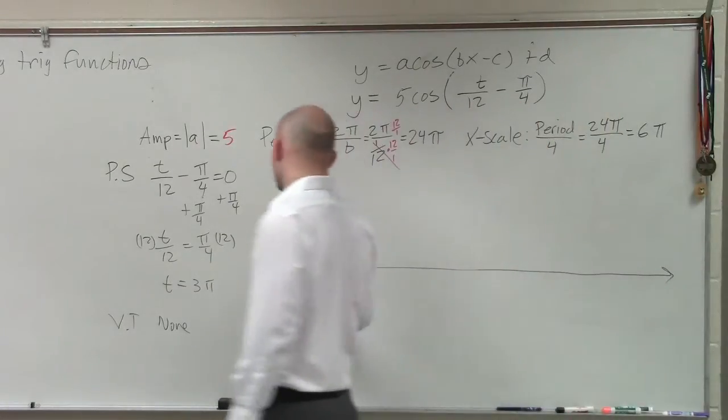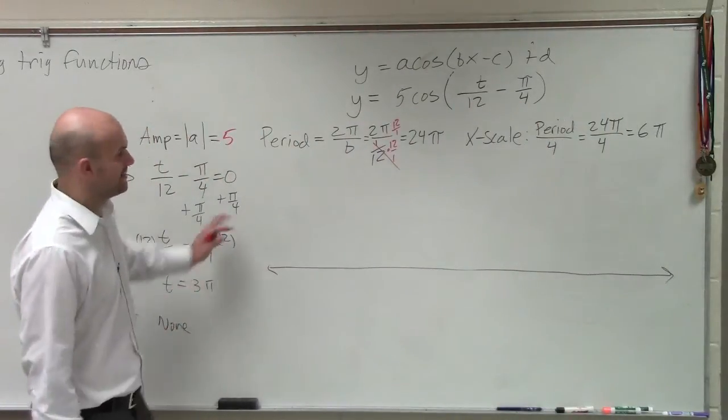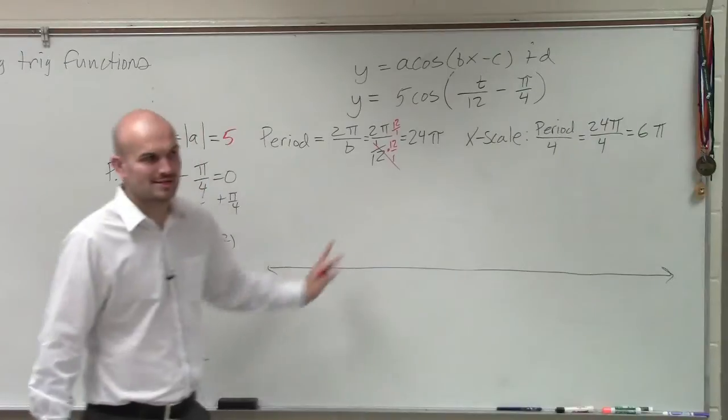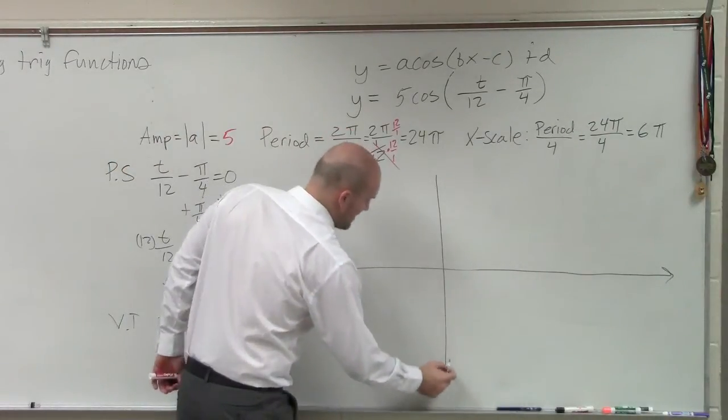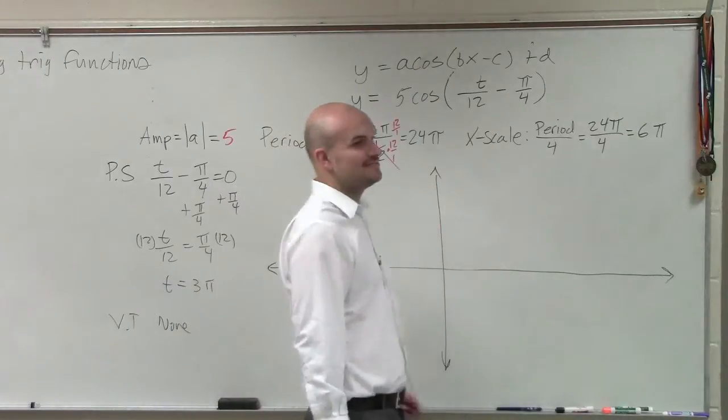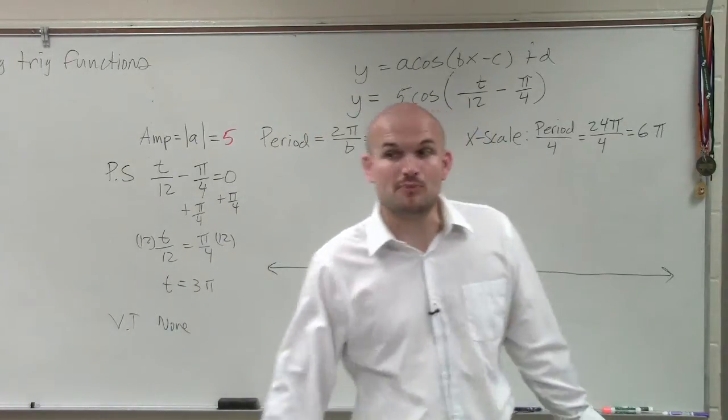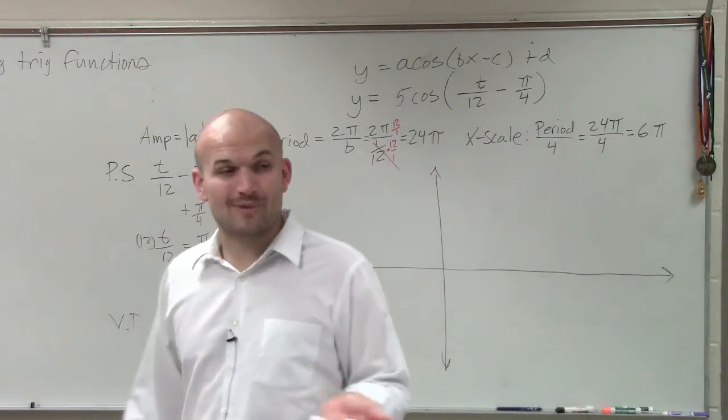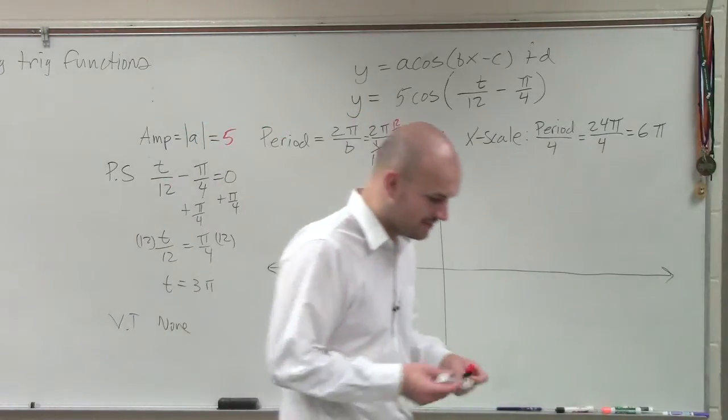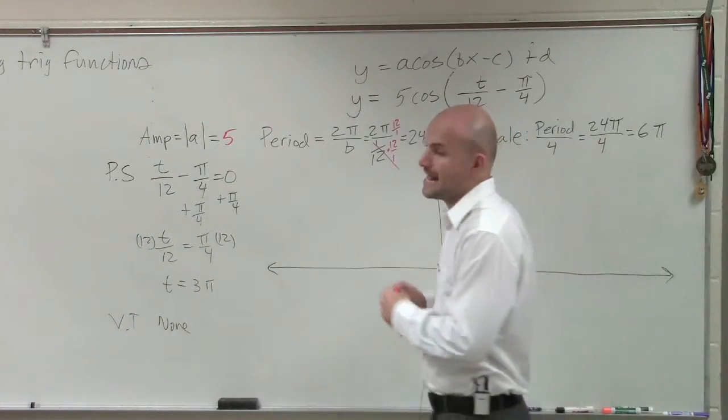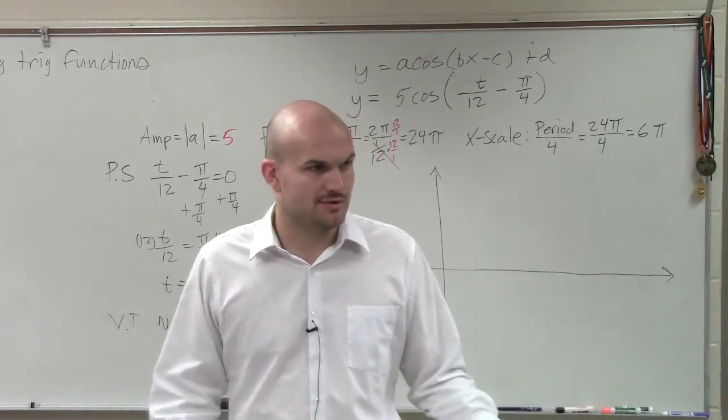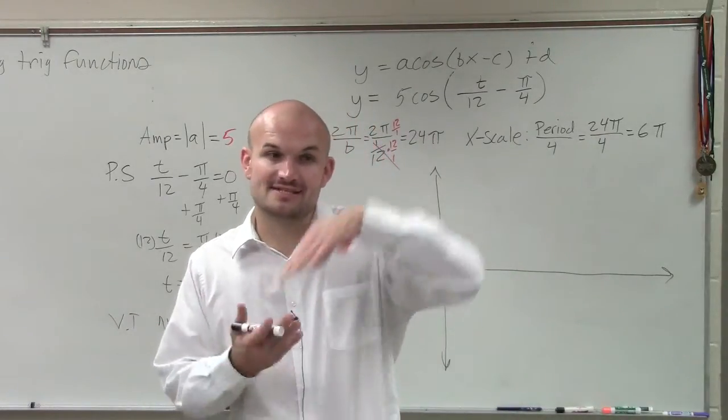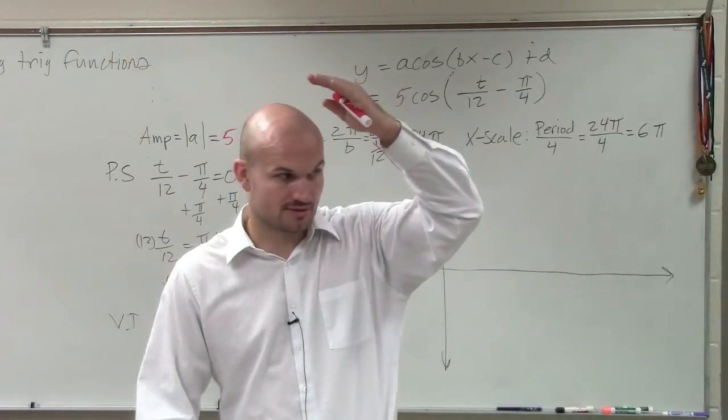So while I'm spending all my time getting all my points correct, because this is all worth points on your test, some of you are already plugging it into your calculator, which is fine. But you need to be able to make sure you know how to find those important points, as well as how to graph this correctly. So let's go into our amplitude, because I think the amplitude is the best place to start. You have your amplitude. Amplitude is the half distance of how high it goes and how low it goes.